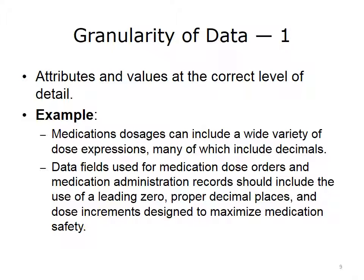Data granularity is the degree of detail that is represented by the data, where the greater the detail, the finer the granularity. Depending on the requirements, multiple levels of detail may be present. Granularity in measurement refers to the intervals in either space, such as inches or feet, or time, such as seconds or hours. If data refer to entities sorted into categories, granularity refers to the choice between a larger number of narrow categories, such as the ICD-10 category, or a smaller number of broad categories, such as the diagnosis-related groupings or DRG codes. Quality in this attribute means striking the proper balance in the level of detail needed.